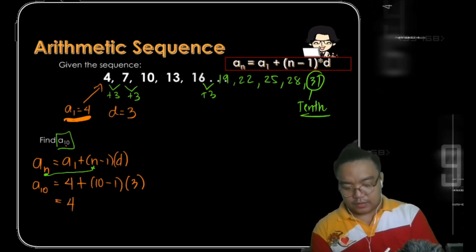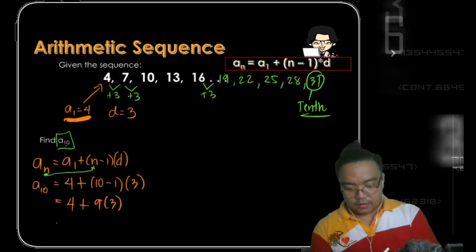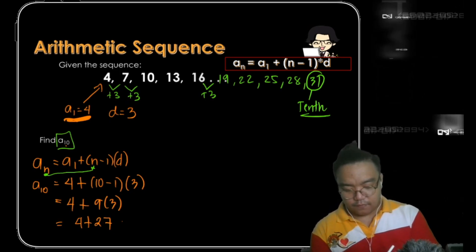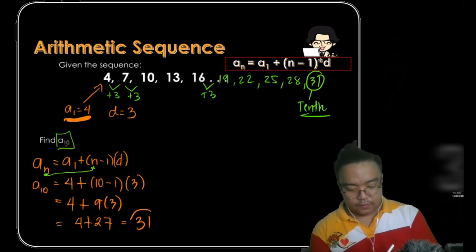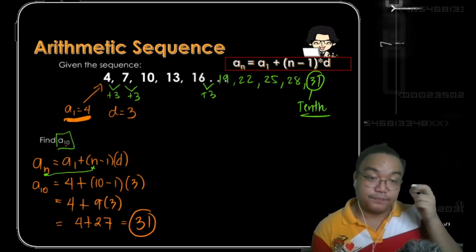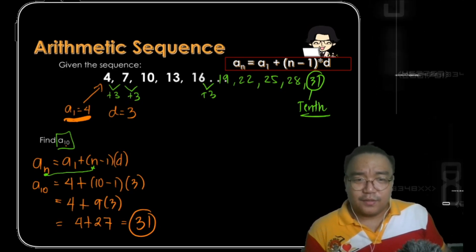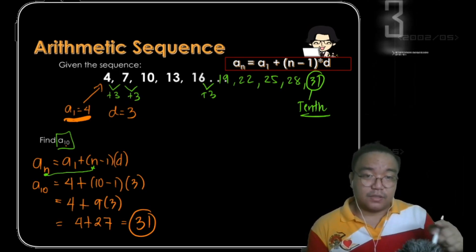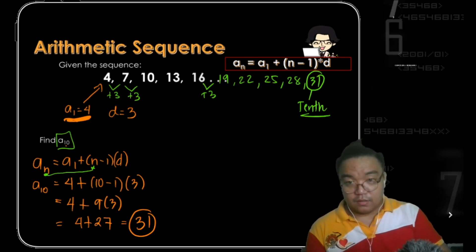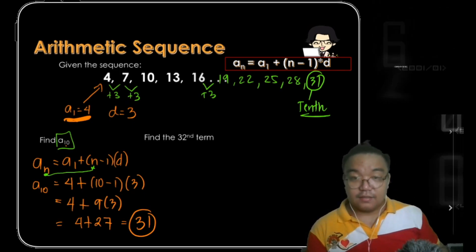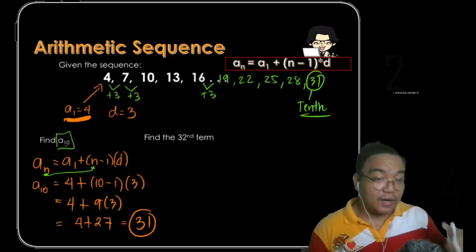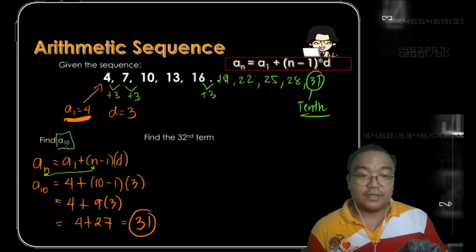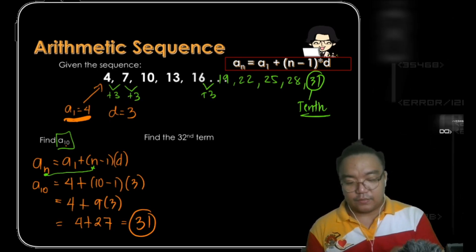Continuing the solution: 4 plus 9 times 3 — since 9 times 3 is 27, we get 4 plus 27 equals 31. They give the same answer. So why use the formula? If you're asked to find the 32nd, 50th, or 100th term, counting continuously would take too much time.